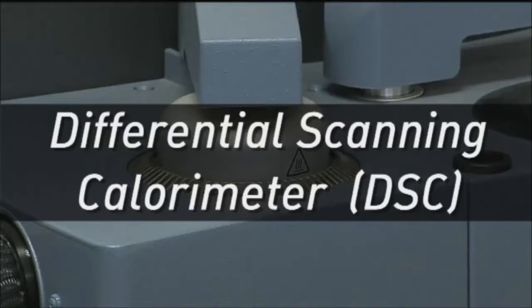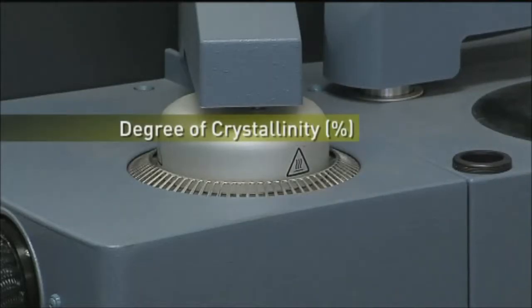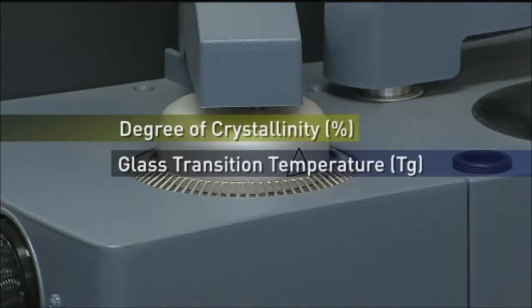The differential scanning calorimeter, DSC, can be used to measure a number of characteristic properties of a polymeric sample. Using this technique, it's possible to get crystallization events as well as glass transition temperatures and the degree of curing of the polymers.